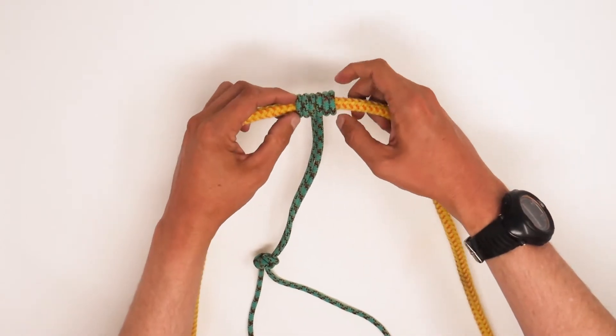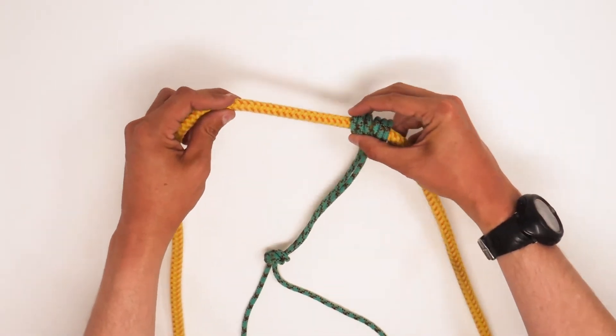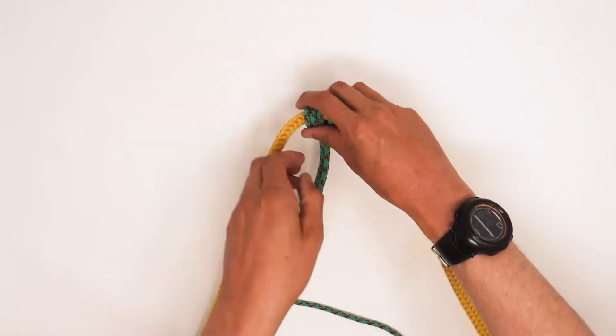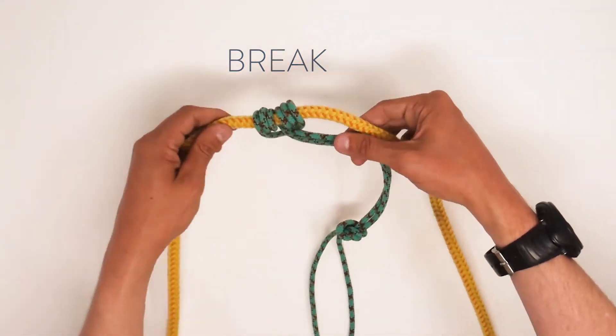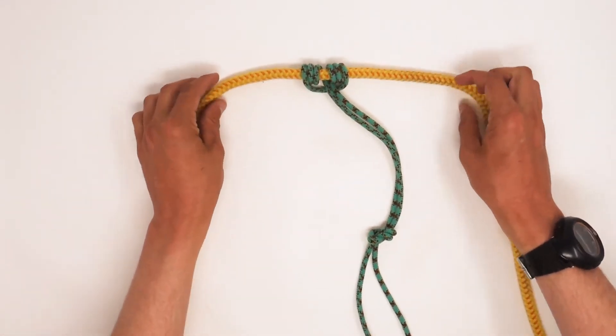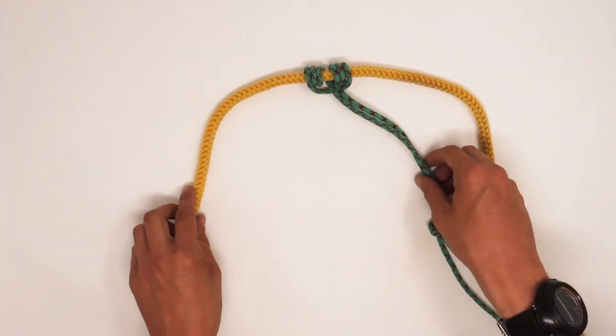All right, it's dressed and laying nice and flat. It can slide left or right when we grab the knot, and it also can break left or right by pulling onto the end of the Prusik loop.